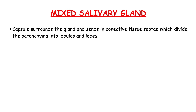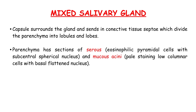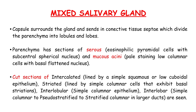The parenchyma has sections of serous, eosinophilic pyramidal cells with sub-central spherical nucleus, and mucous acini base tending low columnar cells with basal flattened nucleus. Cut sections of intercalated ducts are lined by a simple squamous or low cuboidal epithelium.